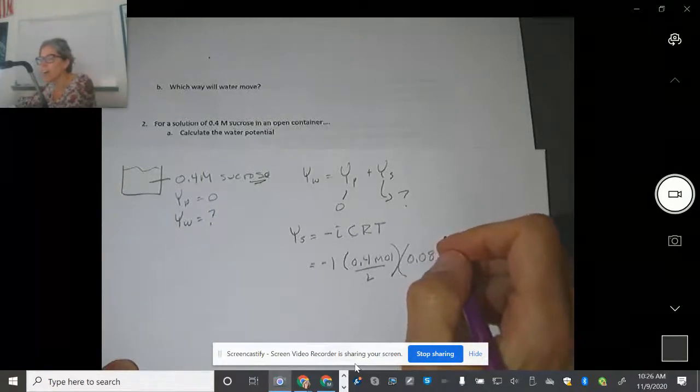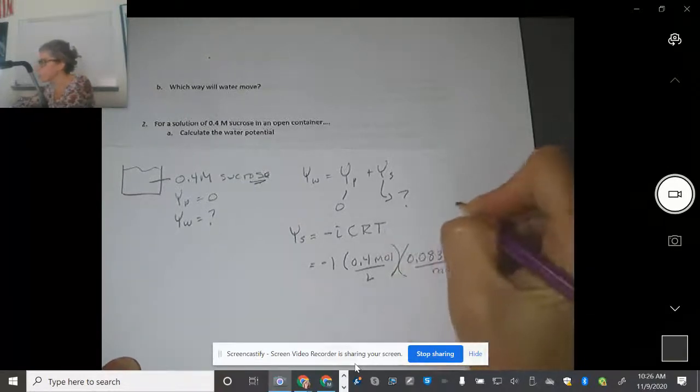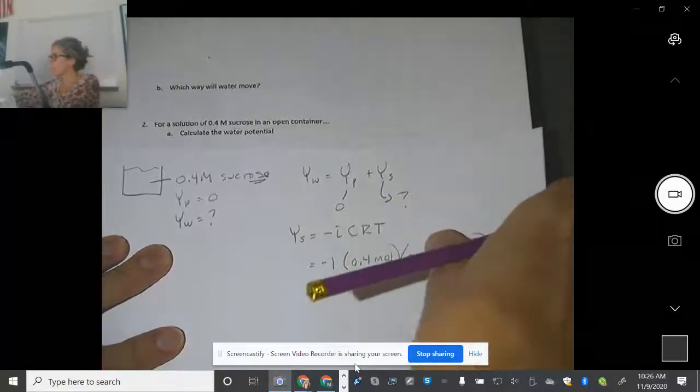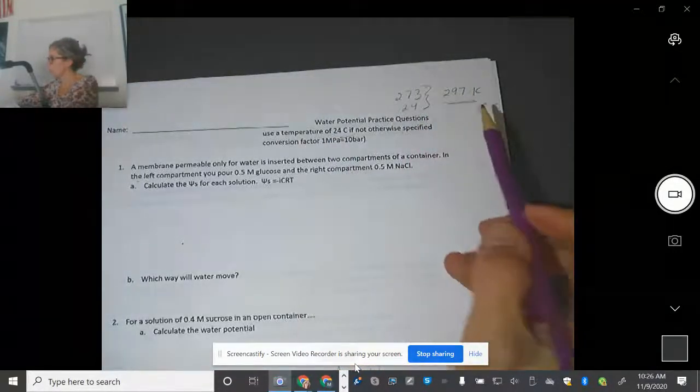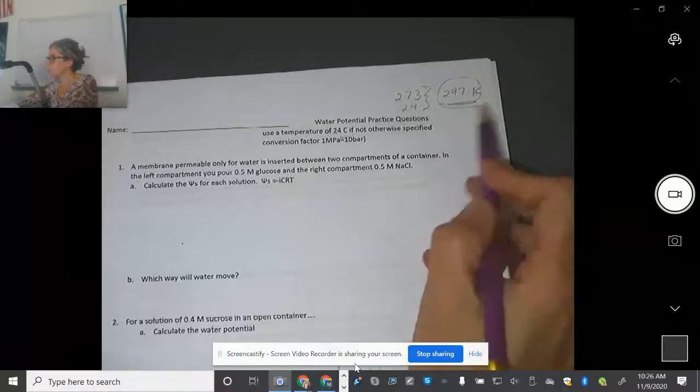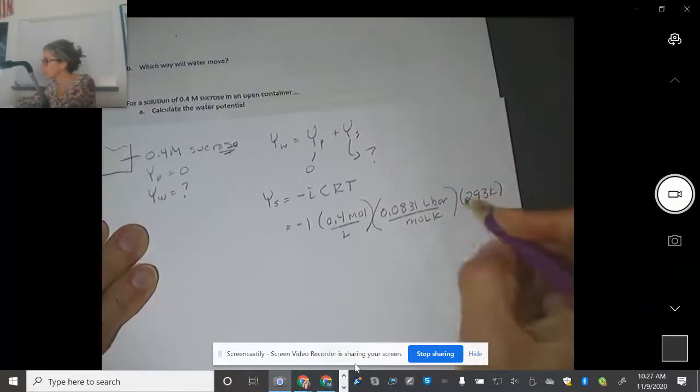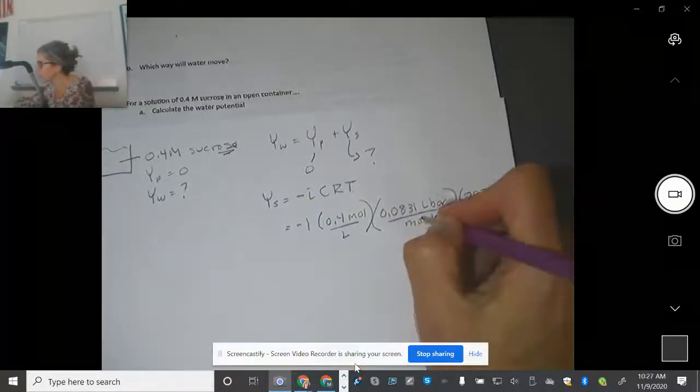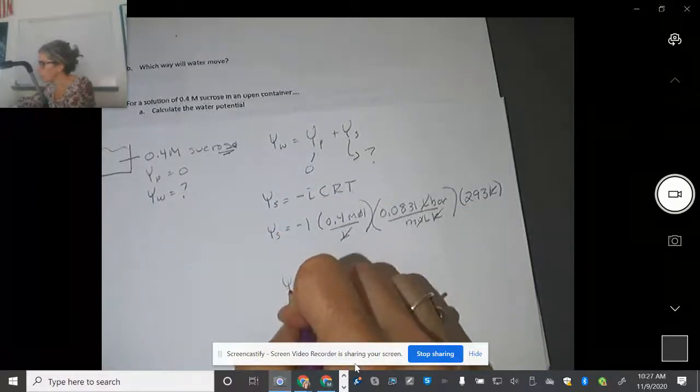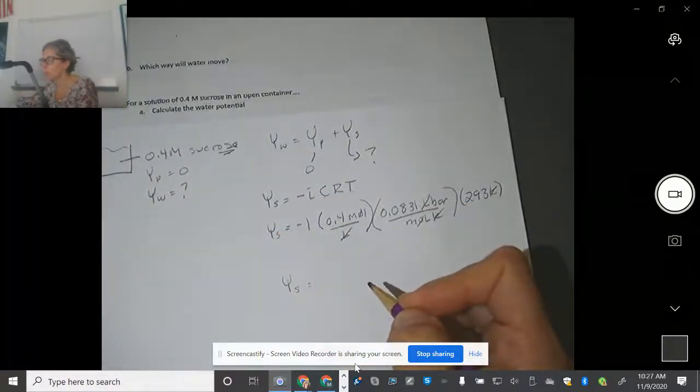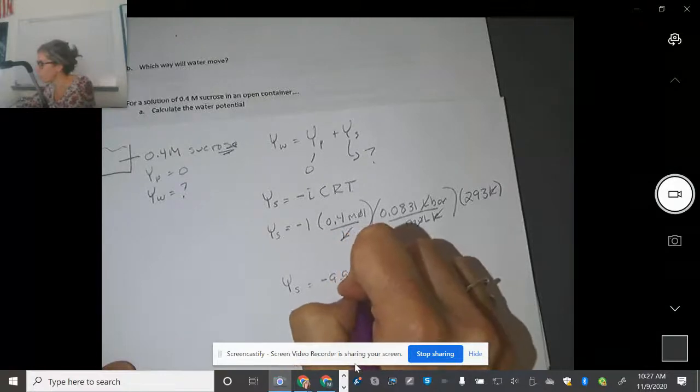The R is 0.0831. And the units of that are liter bar per mole Kelvin. And then the temperature, it says at the top of this sheet, unless it says otherwise, we should use 24 degrees Celsius. But you've got to convert that to Kelvin because these numbers need to be converted to Kelvin. So you just add 273. And in this case, you get 293 Kelvin. I can cross out my Kelvins. I can cross out my moles. One's on the top, one's on the bottom. Liter, bottom top, I'm left with bars. So that gives me, for number two, a solute potential of negative 9.9 bars.